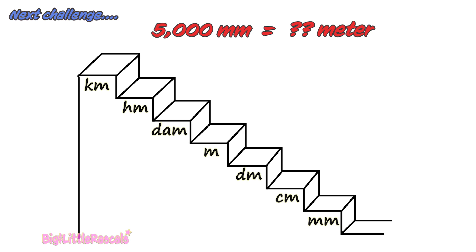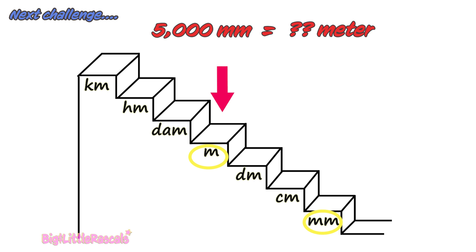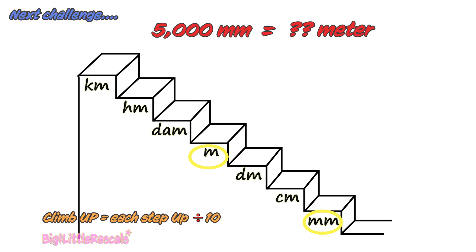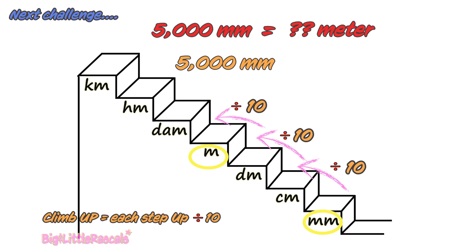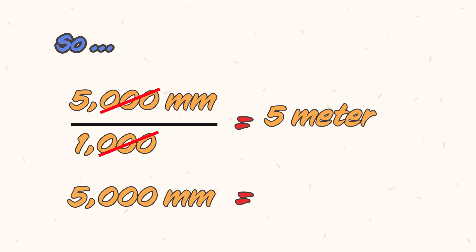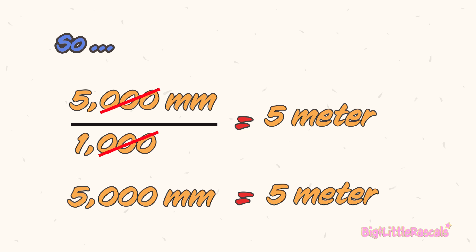Now let's try another challenge. 5,000 millimeters is how many meters? First, find where millimeter is. There it is. Then find the meter. You need to jump up from millimeter to meter. Remember the formula: as you are climbing up, each step you jump up, you divide by 10. One, two, and three jumps. So, 5,000 millimeters divided by 10, by 10, and by 10 — it gives you 5,000 millimeters equals to 5 meters.